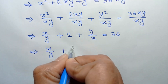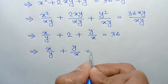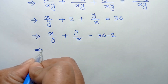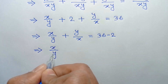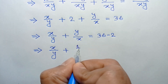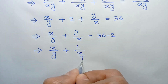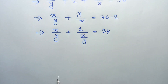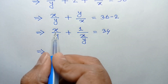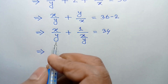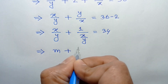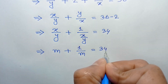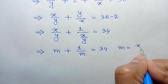This gives us x over y plus 2 plus y over x is equal to 36. Taking the 2 to the right side, x over y plus y over x equals 36 minus 2, which is 34. Now if we consider x over y as m, we can write m plus 1 over m equals 34, where m equals x over y.